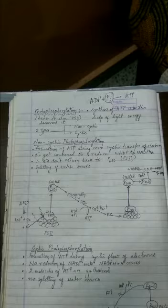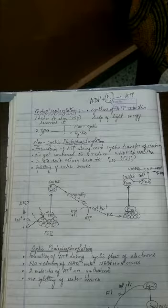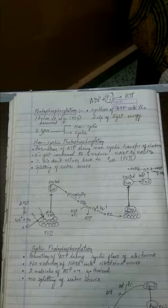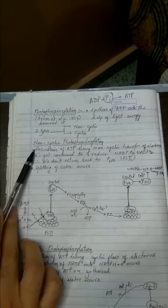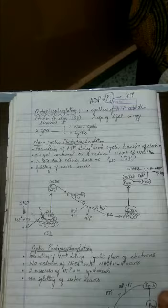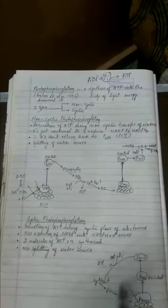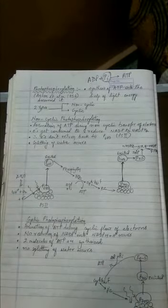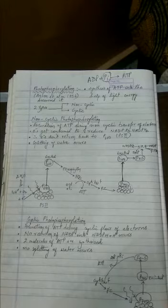Photophosphorylation are of two types, cyclic type as well as the non-cyclic type. What is cyclic and non-cyclic? It's very easy to understand. When both the photosystems are involved, it is called as non-cyclic. Photosystem first as well as photosystem second. When only one system is involved, it is called as the cyclic photophosphorylation.